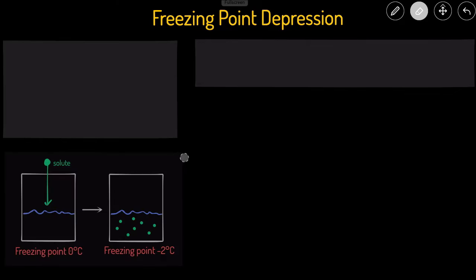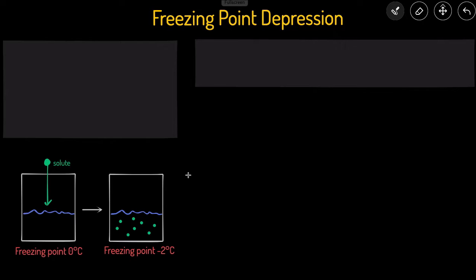So first of all, what is freezing point depression? Freezing point depression is one of the colligative properties, and the concept is that when you dissolve a solute into a solvent, it will cause the freezing point to decrease. For example, here I have a picture of a sample of water, and we know the freezing point of water is zero degrees Celsius. If we add some solute into the water and mix it and dissolve the solute, it will cause the freezing point to decrease.